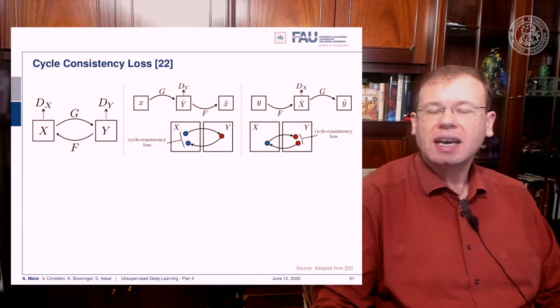The cycle consistency loss is a coupled loss that translates x to y and y to x again, and makes sure that the sample generated at y is still not recognized by the discriminator. At the same time, you have the inverse cycle consistency, which is translating y into x using f, and then x into y using g again, while fooling the discriminator in x.